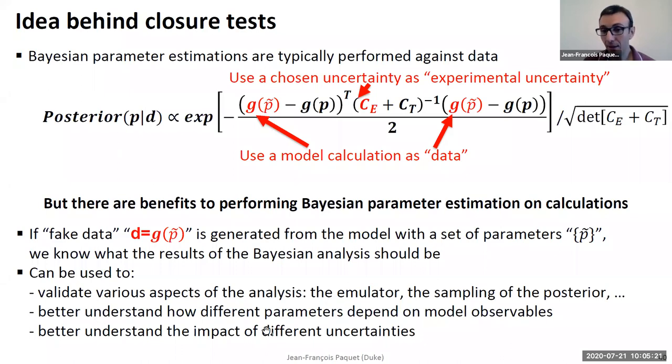And you can add observables that haven't been measured yet. You can try to see what happens if you use finer centrality bins or wider centrality bins. So you really have a flexibility when you do a closure test that you do not have when you compare with data, obviously, because when you compare with data, you use what is available out there.